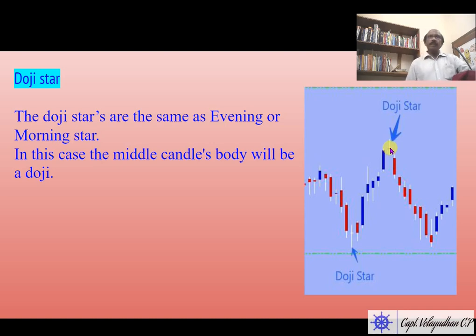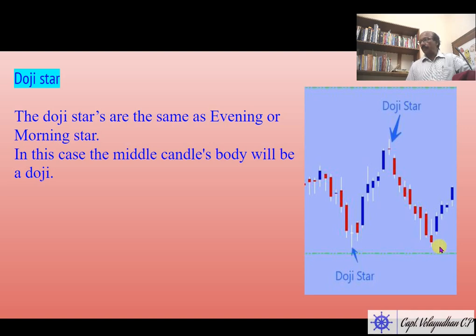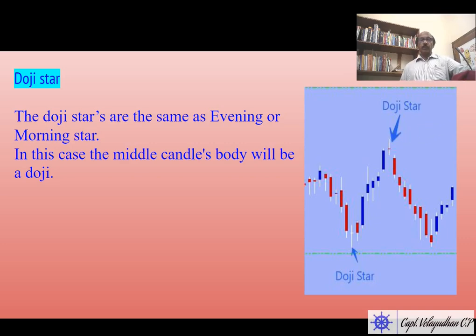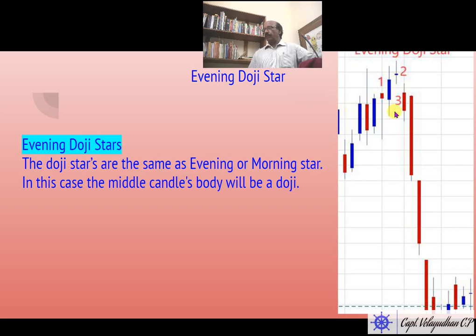Here the decision is not confirmed — bulls and bears are in equal strength. This is a decision candle. However, the next day the market opened down with a gap, then further the market moved down for multiple candles. This top part became the resistance. This is a doji star. This is an example of an evening doji star in an uptrend — the market gapped up, pulled up, then pulled back and closed with a narrow body.